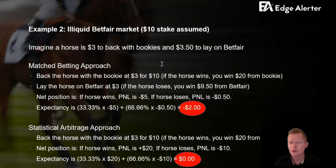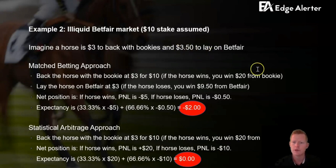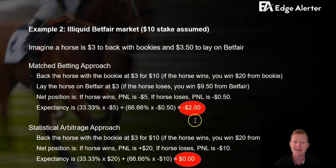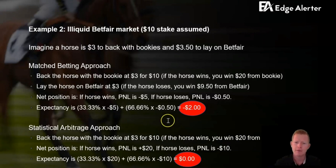Example two covers an illiquid Betfair market. Backing at $3 and laying at $3 is rare — more likely you'd be backing at $3 and laying at $3.30, $3.40, or more. We'll use $3.50 in this example. If you're backing at $3 and laying at $3.50, the expectancy is negative $2.00 — off a $10 stake that's negative 20%. You're donating a lot just to hedge and manage risk. The statistical arbitrage approach again has an expectancy of zero, so it's a 20% profit-on-turnover difference — and that's extremely significant.